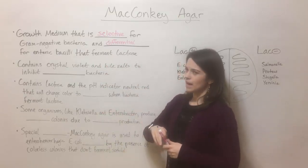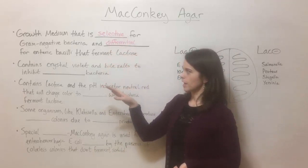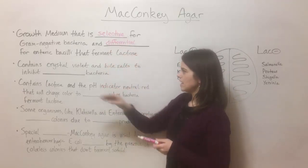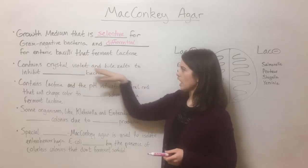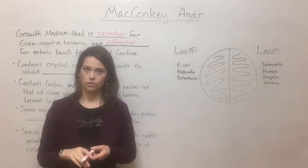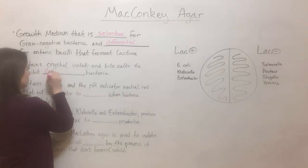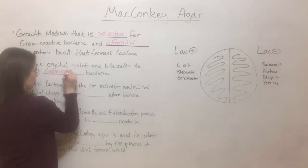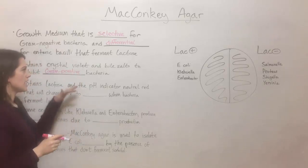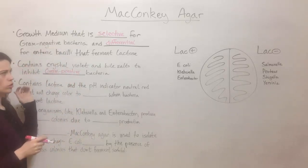Let's talk about how it does these things. First of all, how is it selective for gram-negative bacteria? Well, it contains crystal violet and bile salts, and these actually inhibit the growth of gram-positive bacteria. That's how it inhibits some bacteria while allowing other bacteria to grow.